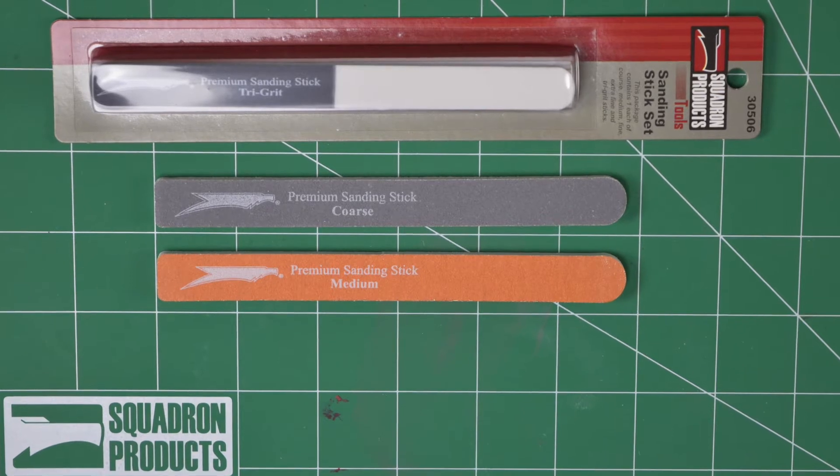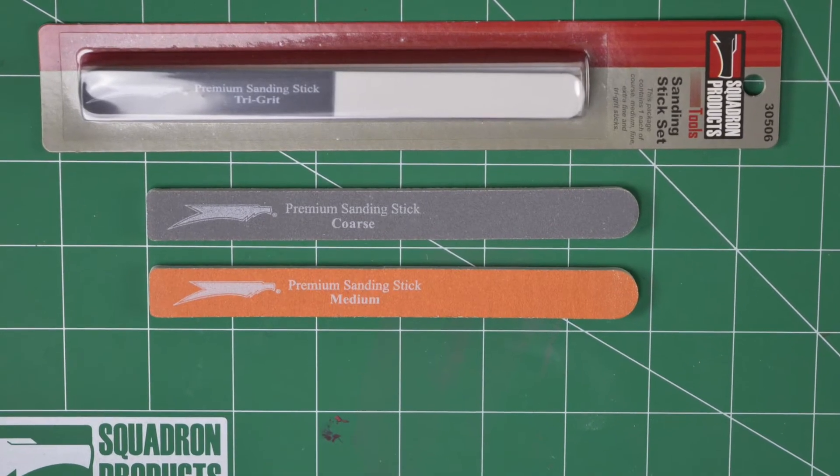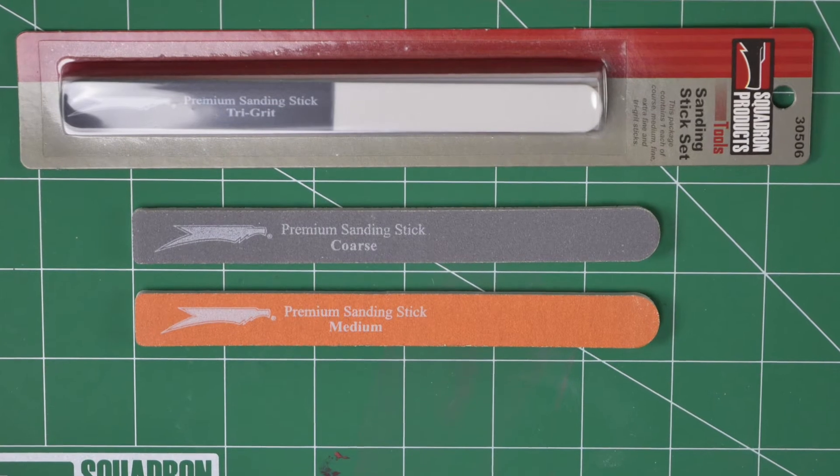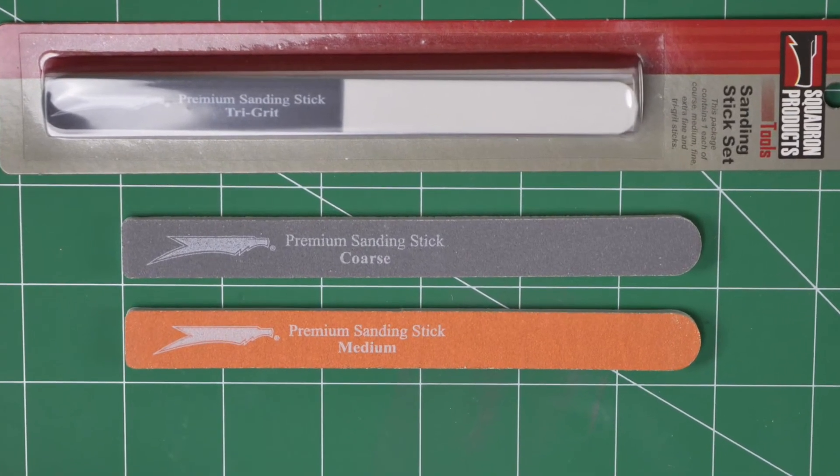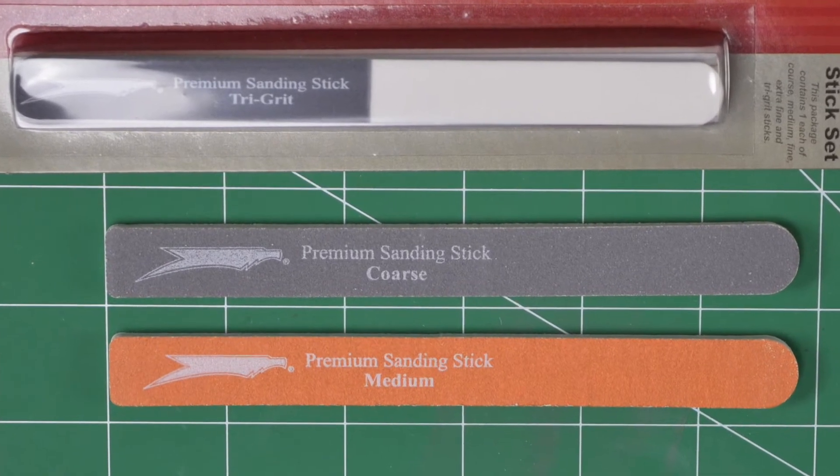Here's a value-packed assortment of sanding sticks. What's included are five different grades: the tri-grit, extra-fine, fine, medium, and coarse. For those on a budget, this makes an excellent value. We also sell the sanding sticks separately.